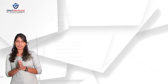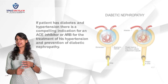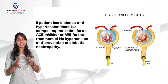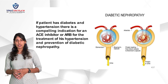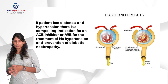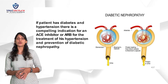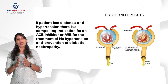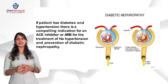Now let's see what diabetic nephropathy is and why we use ACE inhibitors and ARBs in it. Diabetic nephropathy is a complication of diabetes. If a patient is both diabetic and hypertensive, there is a compelling indication that the patient must use ACE inhibitors or ARBs for treatment of hypertension and also for prevention of diabetic nephropathy.